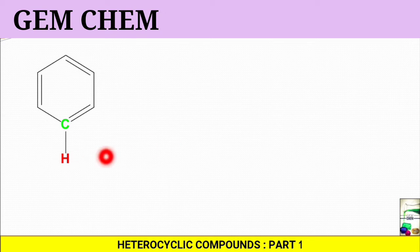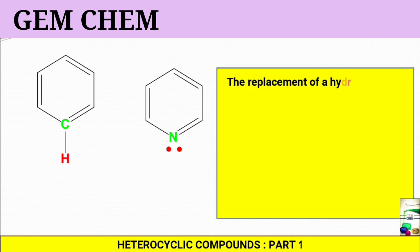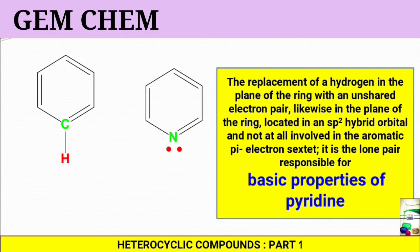If we consider the replacement of this hydrogen in the plane of the ring with an unshared pair of electrons which is present in nitrogen, likewise in the plane of the ring located in an sp2 hybridized orbital which is present here and not at all involved in aromatic pi electrons which forms the sextet - that is the 6 electron configuration - it is this nitrogen lone pair which is responsible for the basic properties of pyridine.